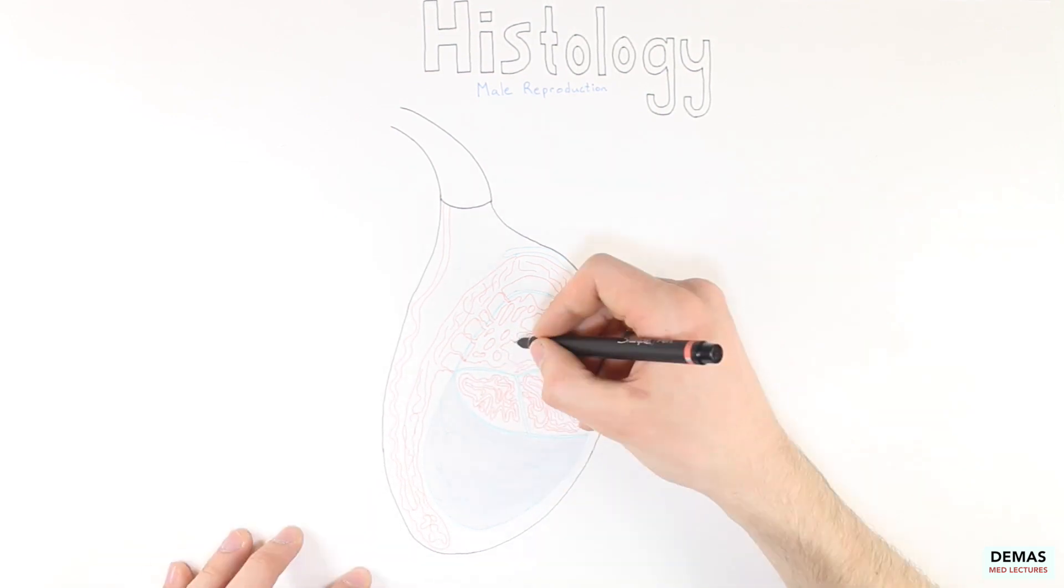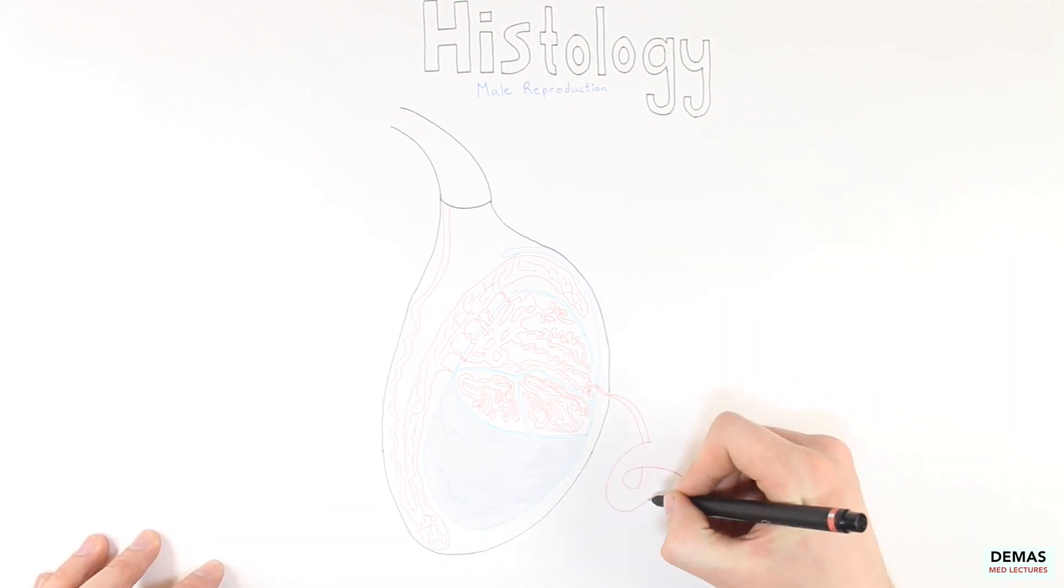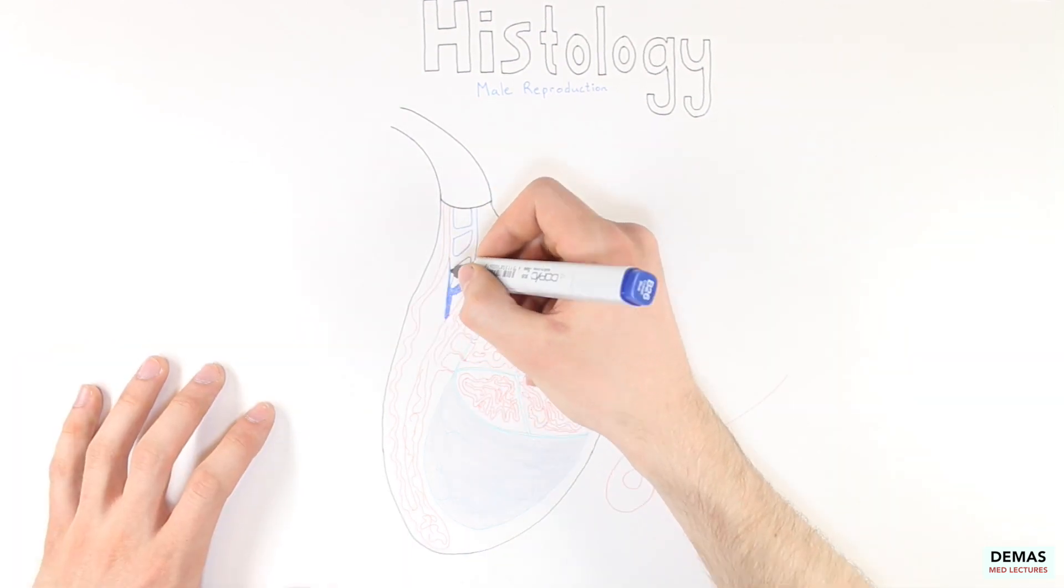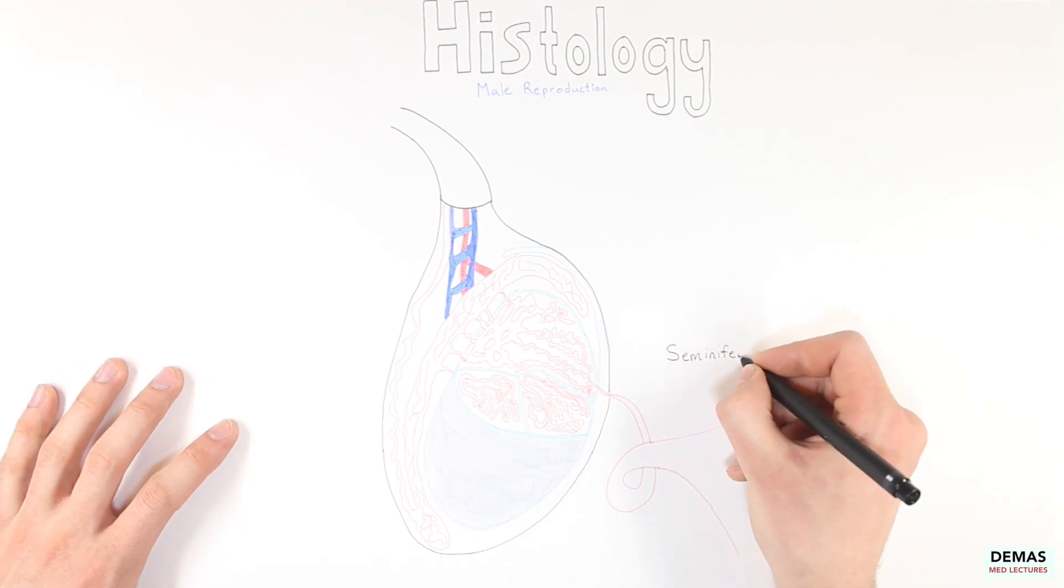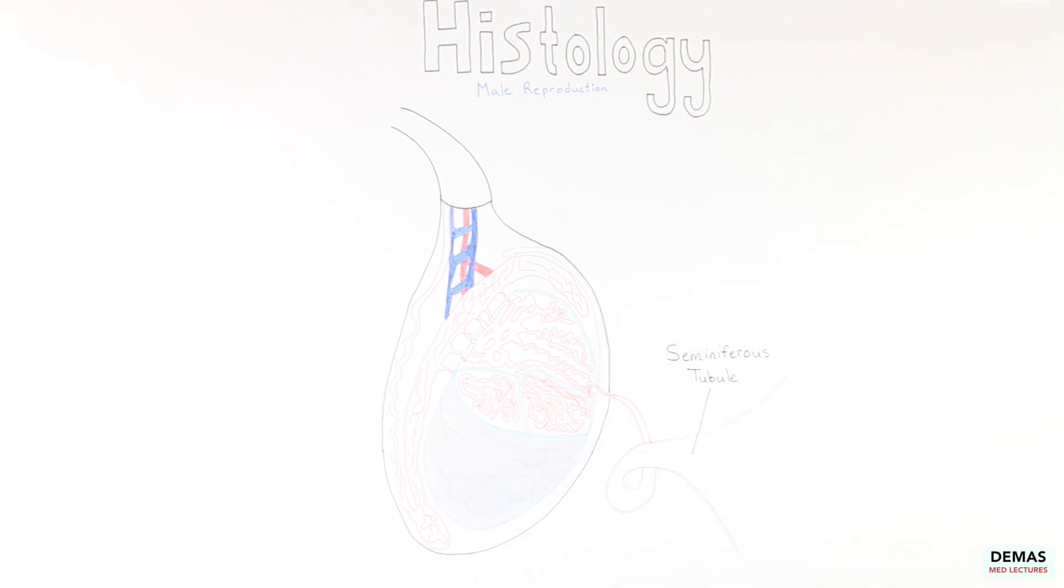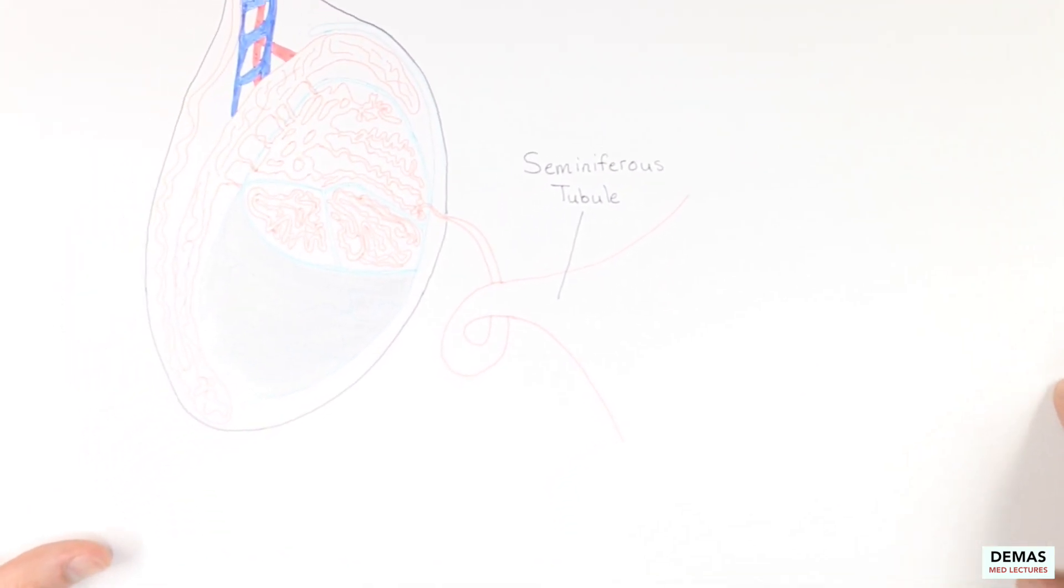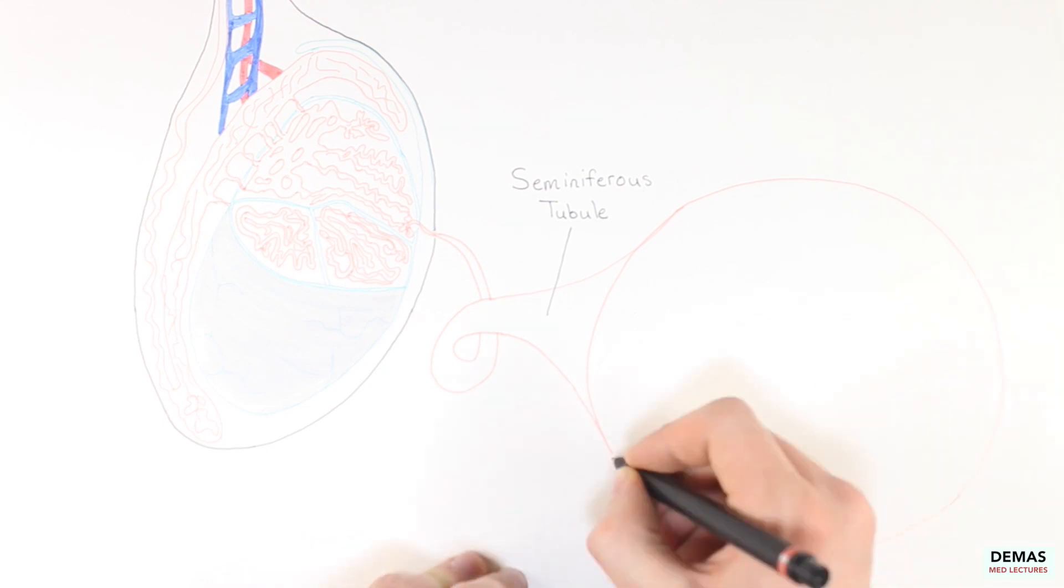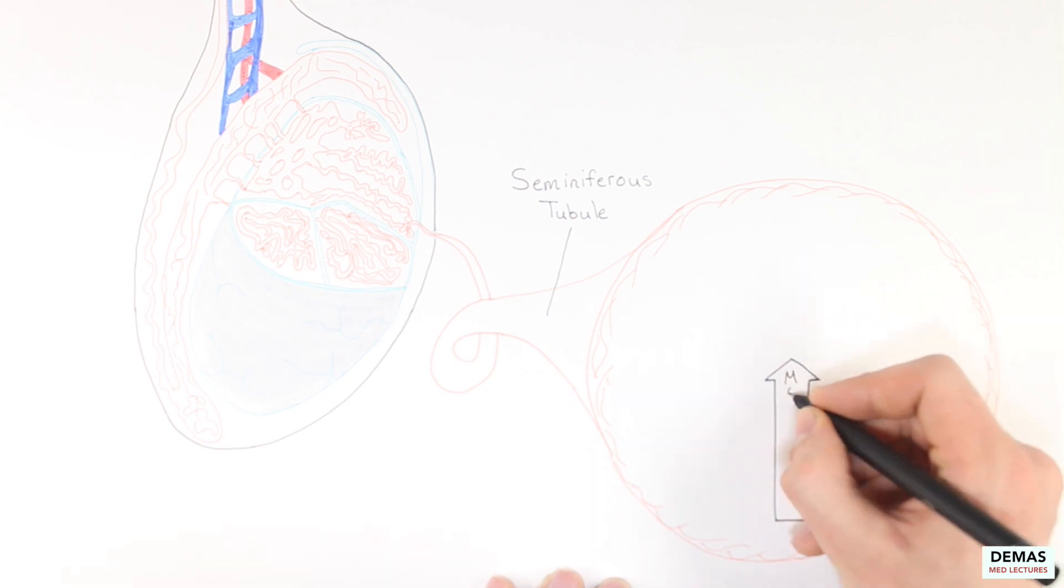I've begun by drawing a schematic of the testicle. Within the testicle is a number of tubes and ducts that are vital in the formation, storage, and transport of sperm. Let's zoom in on a location where the sperm is formed in the seminiferous tubules. This is the location of spermatogenesis, or the process of sperm formation. I will first draw a cross-section of the seminiferous tubules.